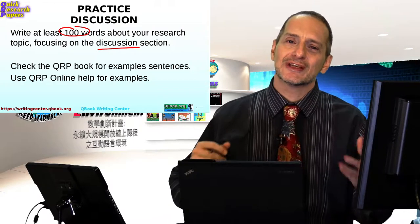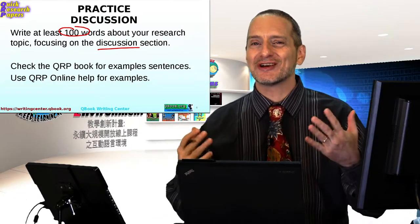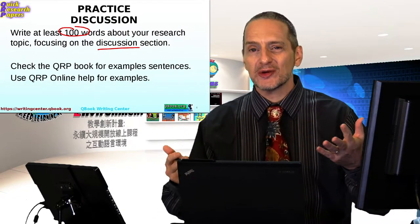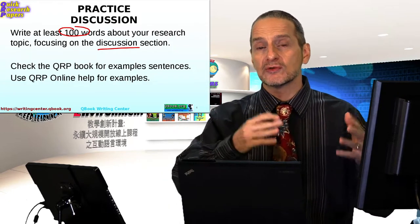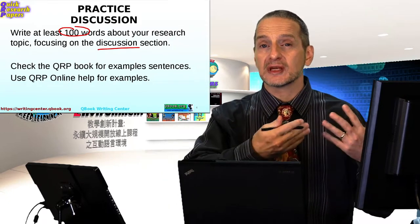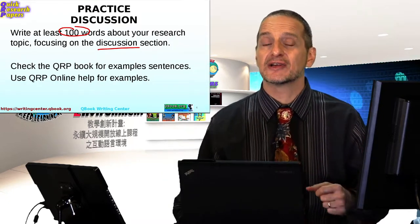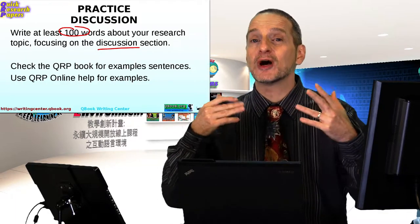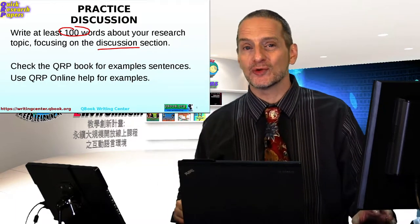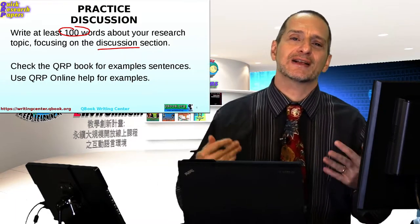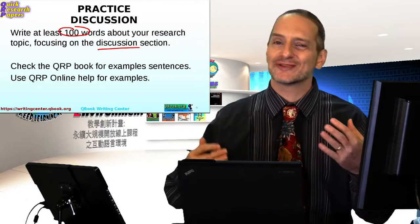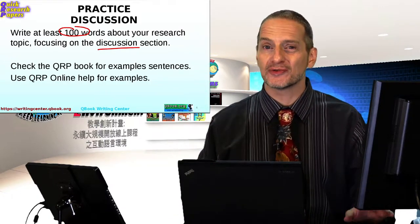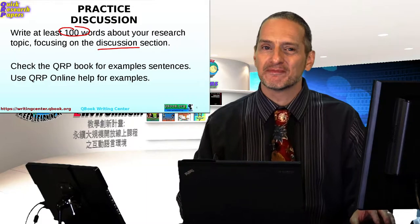Now, of course, if you don't really have research, how can you have a discussion? Well, try your best to make it up or to follow something you can find on Google Scholar and try to rewrite it to be a little bit different from what you imagined it would be. The goal here is to practice your writing, not to do actual research — that's up to you, of course, in what you're doing.